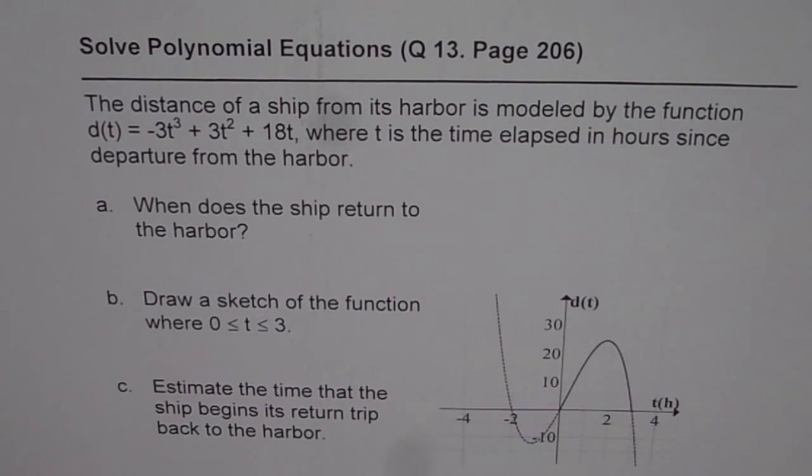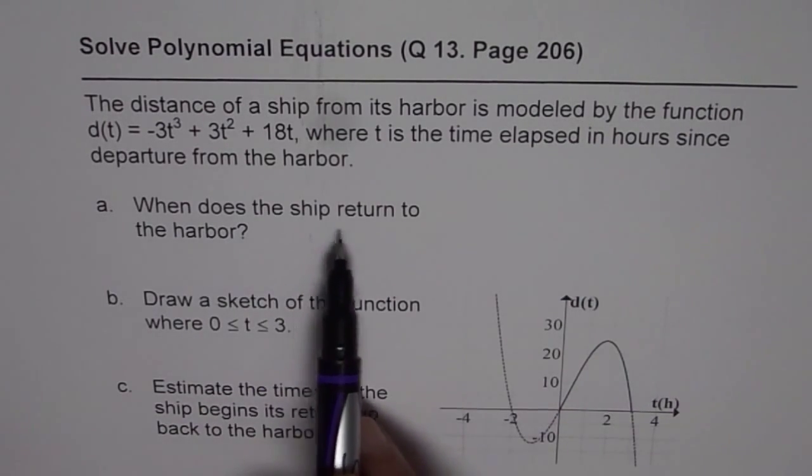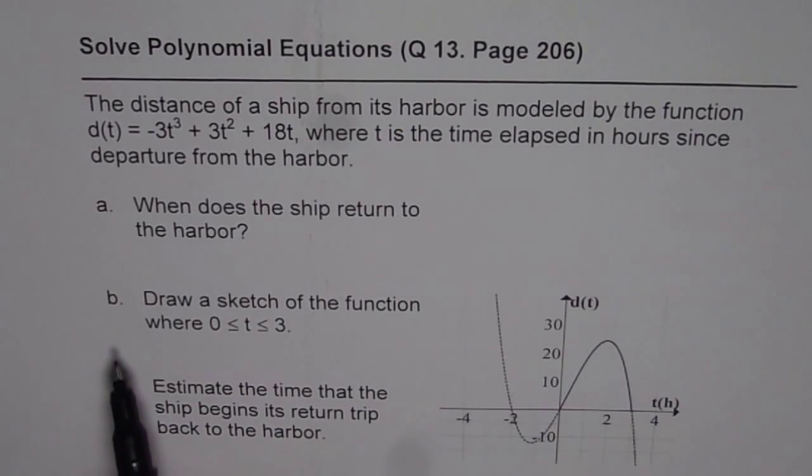Part A is when does the ship return to the harbor? Part B is draw a sketch of the function where t is between 0 and 3. I have already sketched it for you. Part C is estimate the time that the ship begins its return trip back to the harbor.